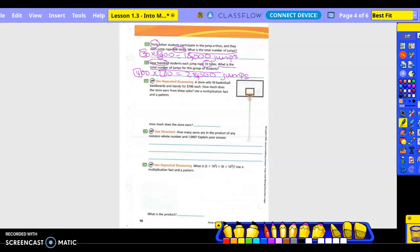Number 22, use repeated reasoning. The store sells 50 basketball backboards for $700 each. How much does the store earn from these sales? Okay, so 50, $700 each. How much does the store earn? So what am I going to do? 50 times 700.